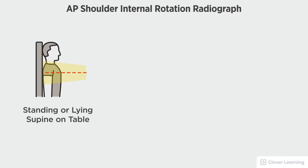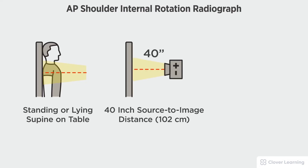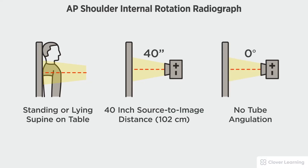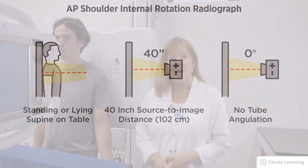In this view we will be demonstrating the AP shoulder internal rotation. The AP shoulder internal rotation should be performed with the patient standing at the upright bucky or lying supine on the radiographic table with a 40 inch source to image distance and no tube angulation. For the internal rotation of the shoulder everything remains the same.